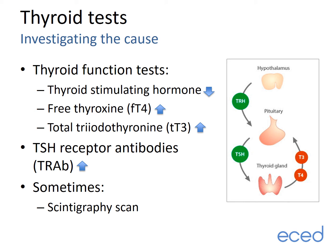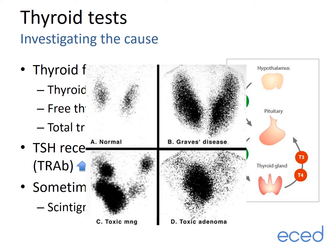We then measure the levels of TSH receptor antibody, or TRAB, which are almost always high in Graves disease, although not in other forms of overactive thyroid. Rarely, we will do a test called a scintigraphy scan, which provides a picture of the thyroid gland and a map of its activity. As you see from these examples, the whole gland is very active or dark in colour in Graves disease, whereas the bottom two examples are patchy because only certain parts of the gland — the nodules — are making thyroid hormone. This test can help work out the cause of an overactive thyroid if it isn't clear from the blood tests which have been performed.